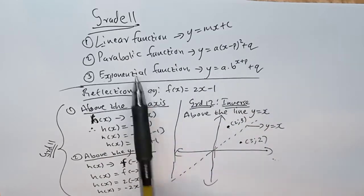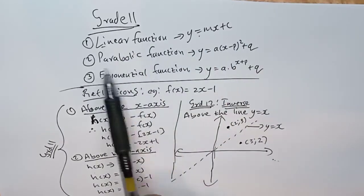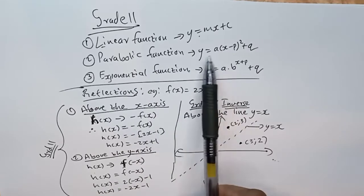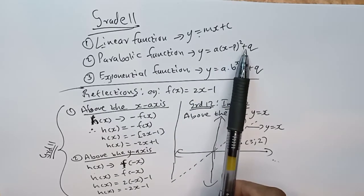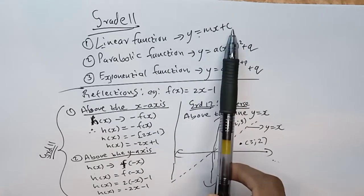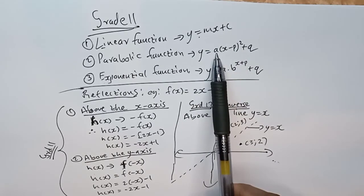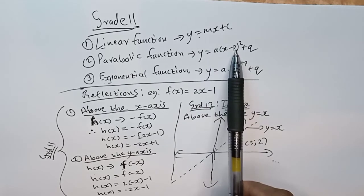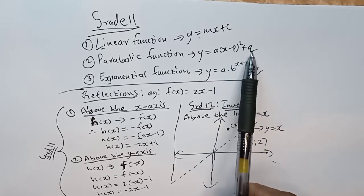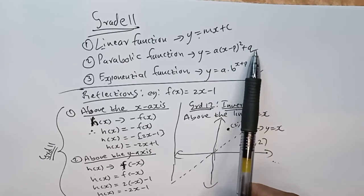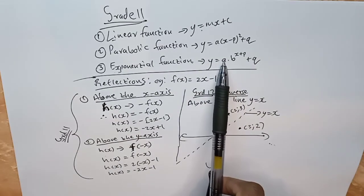For a linear function we have y equals mx plus c. For parabolic we had y equals a times (x minus p) squared plus q. Here, m is the gradient, c is the y-intercept, a is for the shape of the parabola, p is the x-coordinate of the turning point, and q is the y-coordinate of the turning point.